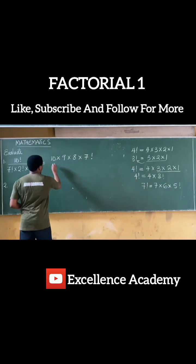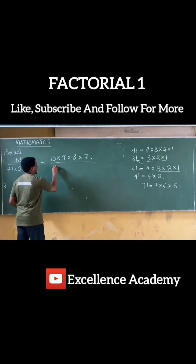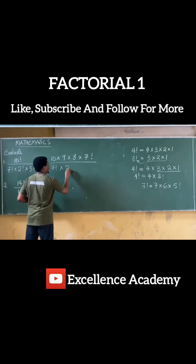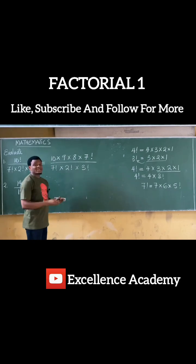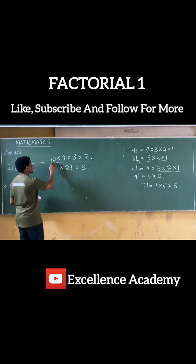That is correct. This now becomes all over 7 factorial multiplying 2 factorial multiplying 3 factorial. Now the reason why we do this is such that the idea here is that you have expressed the greater factorial.